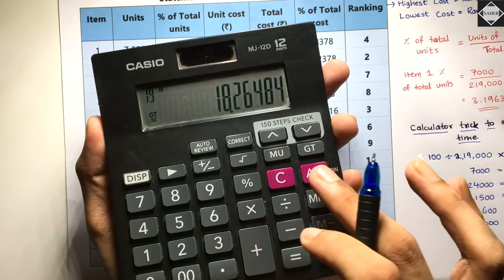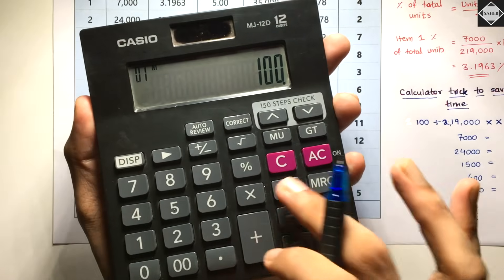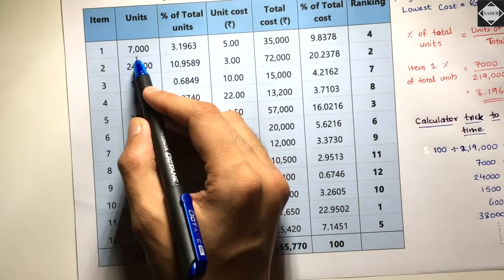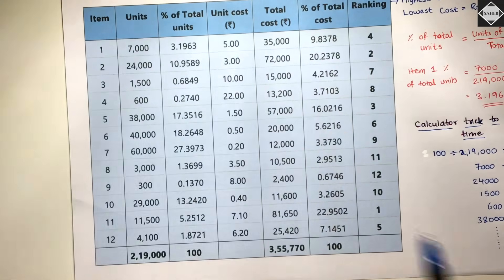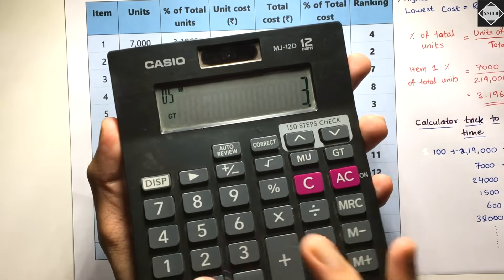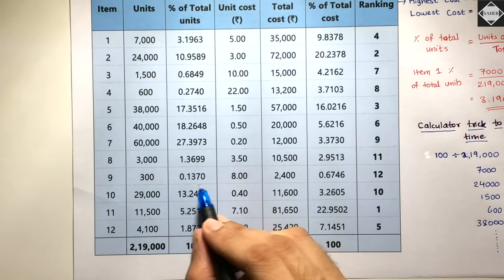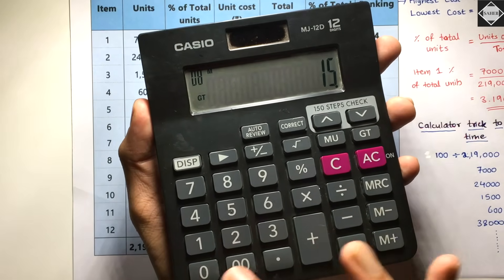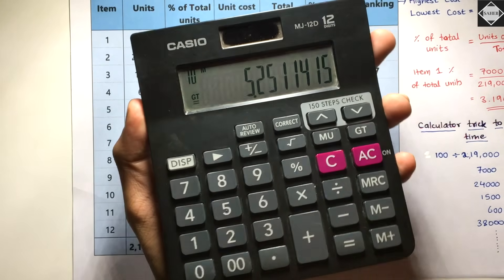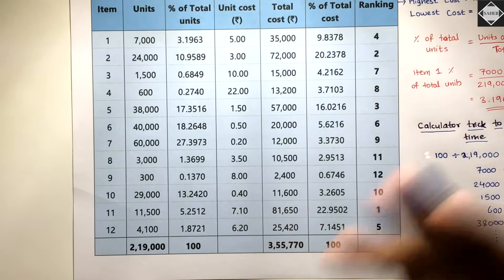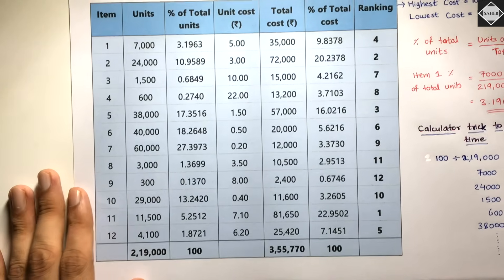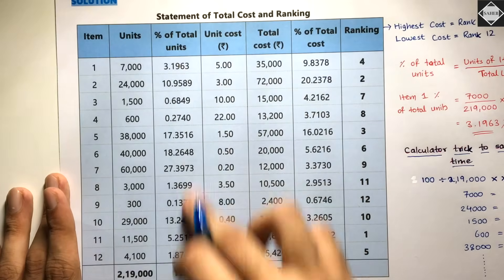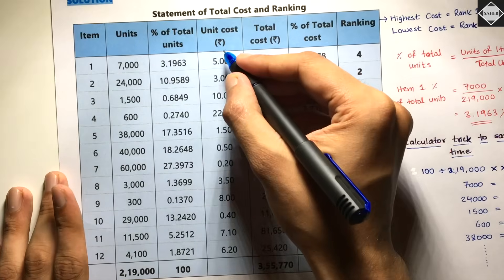To confirm: enter 100 ÷ 2,19,000, press multiply twice, then directly key in 7,000 =, then 300 = which gives 0.137%, then 11,500 = which gives 5.25%. This is how you efficiently calculate all percentages using a simple calculator — no scientific calculator needed, since that is not allowed in the exam.